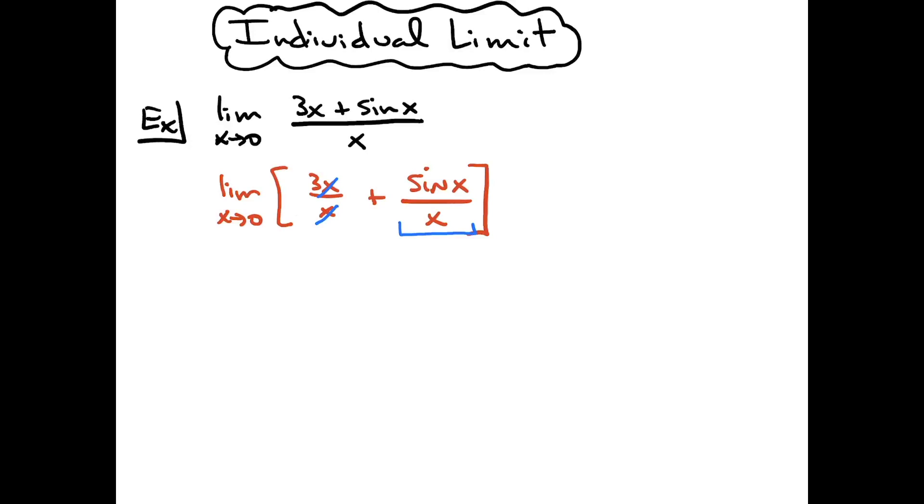So then my next line is going to look like, and if I wanted to go ahead and separate this up into two individual limits I could say this is the limit as x approaches 0 of 3 plus the limit as x approaches 0 of the sine x over x. We know that one goes to 1, the limit of a constant is a constant, so I'm going to have 3 plus 1 for an overall limit of 4.